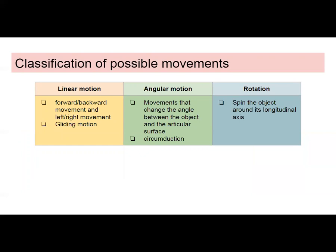Movements can be linear, angular, or rotational. Linear motion means moving in a line — forward and backward, left and right, or gliding. Angular motions are movements that change the angle between the object and the articular surface. An example of angular motion would be circumduction. Rotational motion involves spinning the object around the longitudinal axis.